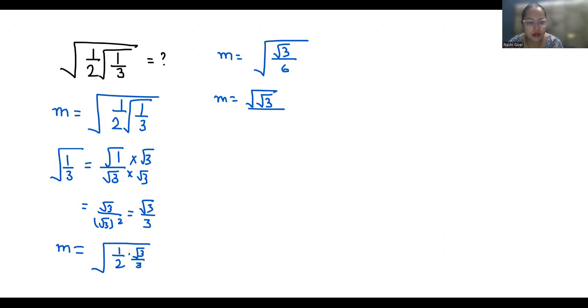If I multiply by root 6 in the numerator and denominator, m is equals to under root under root 3 times under root 6 by 6. So 6 goes to this side, 6m is equals to under root under root 3 times root 6.